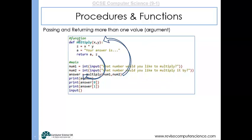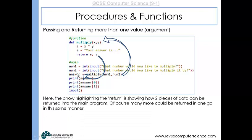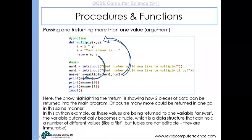Finally, we can return more than one value from a function. Passing two values into the multiply function, z holds the multiplication result and a is the string 'your answer is'. Both a and z are returned back and stored in 'answer', which will be a tuple — a data structure similar to an array — because it holds more than one value. We can then print each index of the tuple separately, or print 'answer' to combine them.